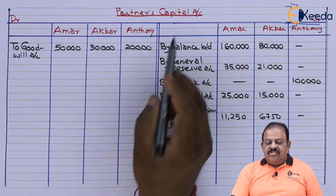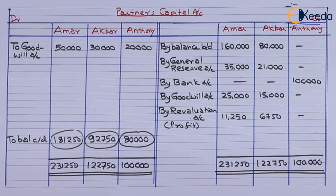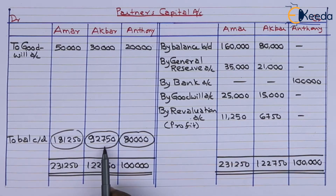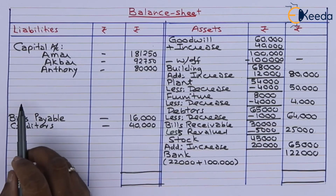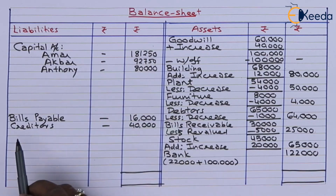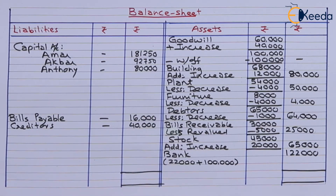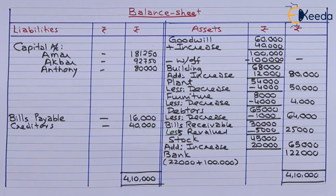Now we can close partners' capital accounts. After closing, we got balancing figures on the debit side: Amar 1,81,250, Akbar 92,750, Anthony 80,000. These will be transferred to the liability side of the balance sheet. Balance sheet liability side: capital of Amar 1,81,250, Akbar 92,750, Anthony 80,000. On the asset side, bank balance is opening 22,000 plus 1,00,000 equals 1,22,000. Total assets 4,10,000, total liabilities 4,10,000 — balance sheet is tallied.